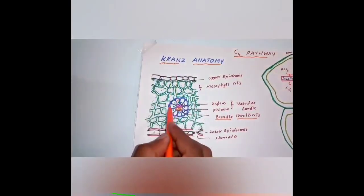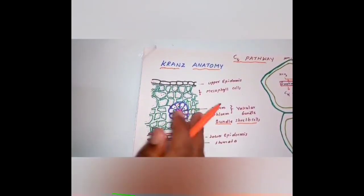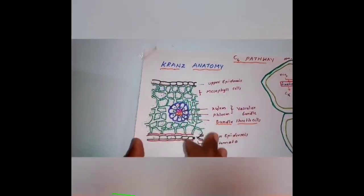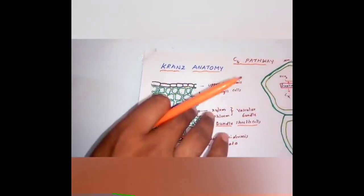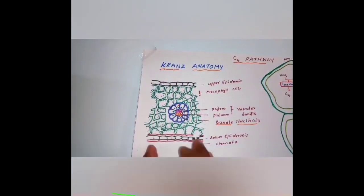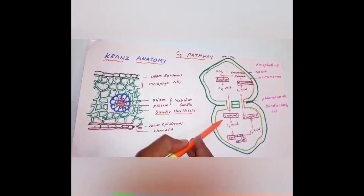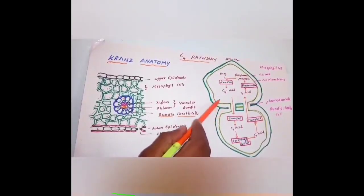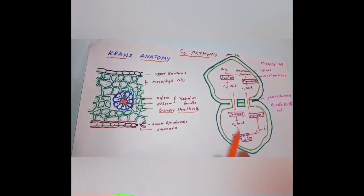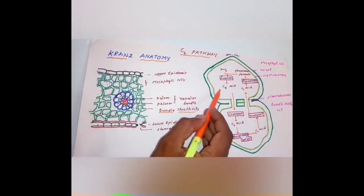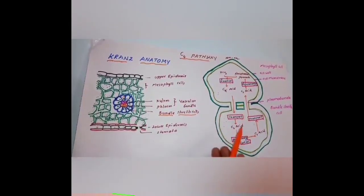Bundle sheath cells have somewhat thickened walls. In these C4 plants, the dark reaction is somewhat different. The chloroplast in C4 plants also shows dimorphism — the chloroplast has two types of features. The chloroplast present in the mesophyll cells has a special feature, while the chloroplast present in the bundle sheath cells has different features.